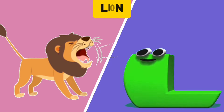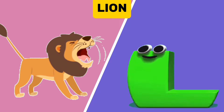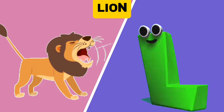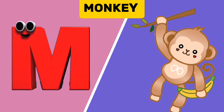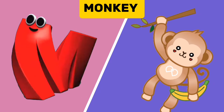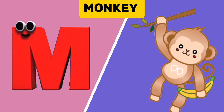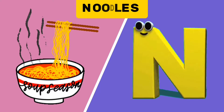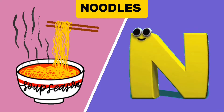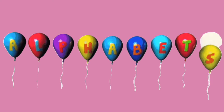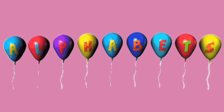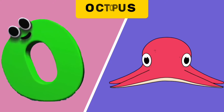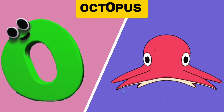L is for Lion. L, L. M is for Monkey. M, M. Monkey. N is for Noodles. N, N. It's the letters of the alphabet!